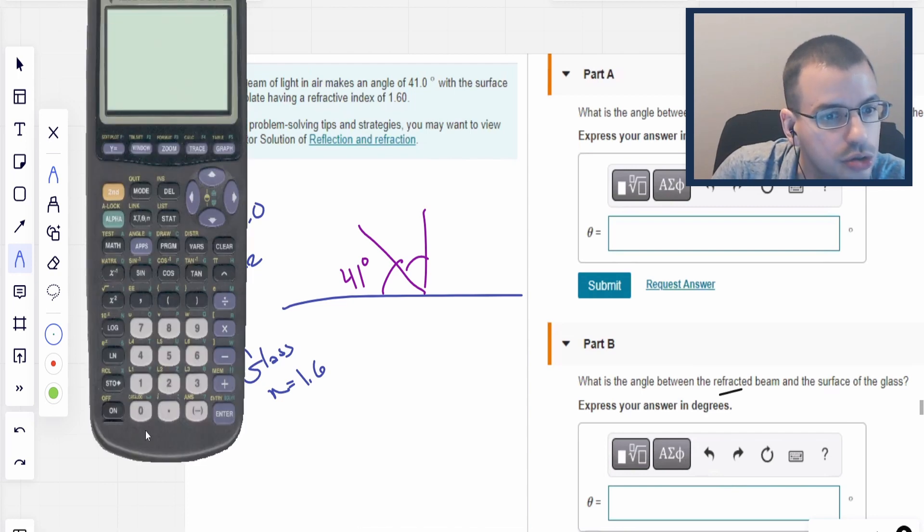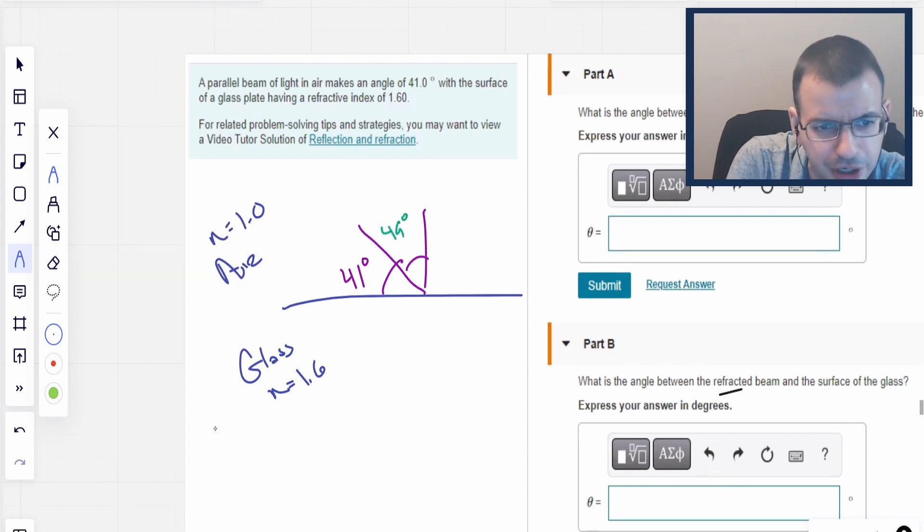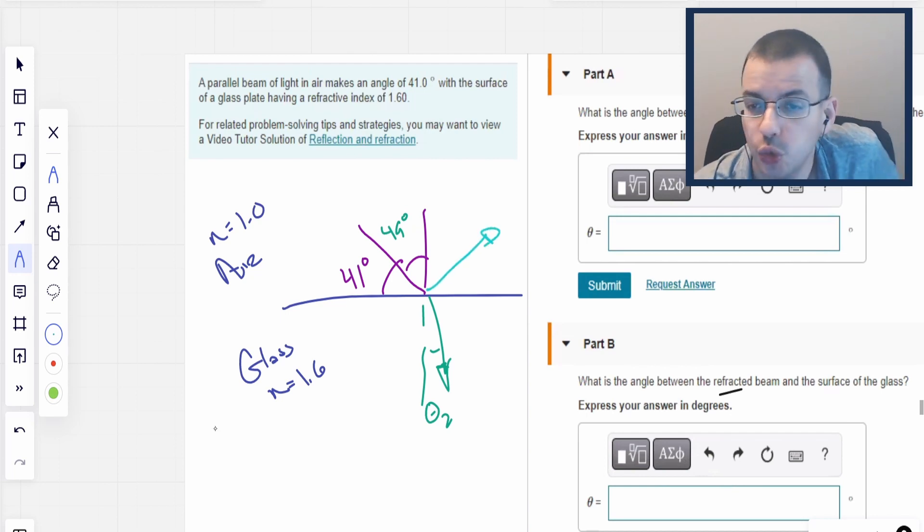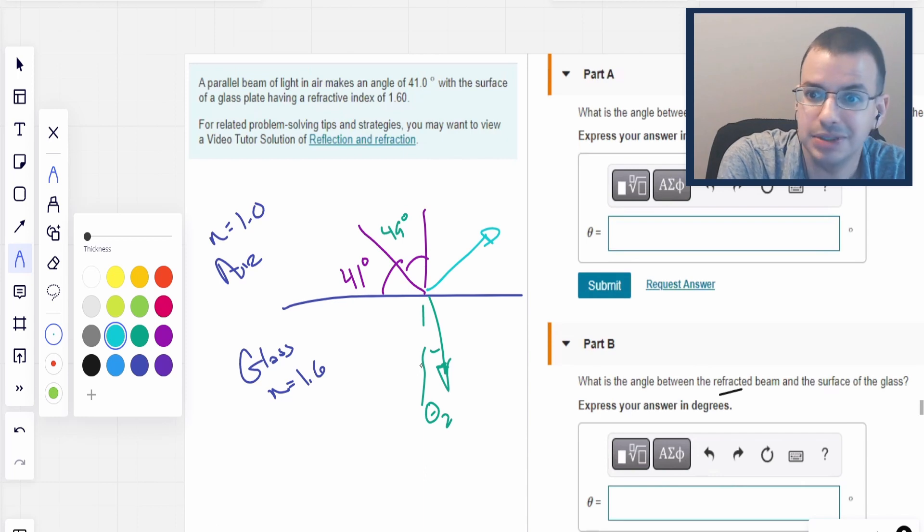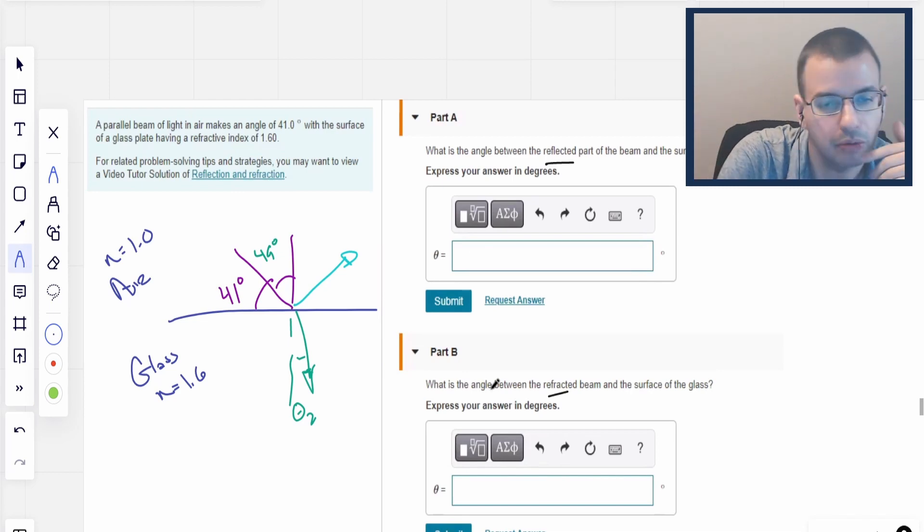It's going to have an angle. So it says specifically 41 degrees with the surface. Now when we're talking about Snell's law and refraction reflection, that's not what we care about. We care about this angle with respect to the normal. So first thing I'm going to do is convert that to the complementary, 90 minus 41. So we have 49 degrees.